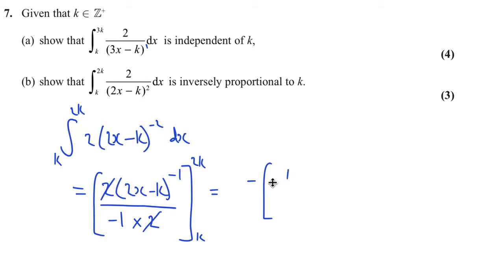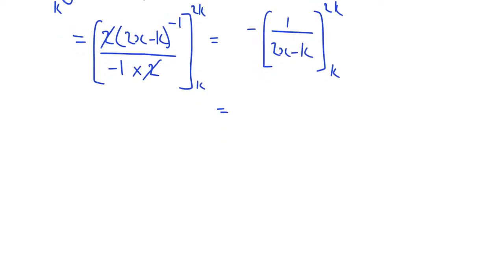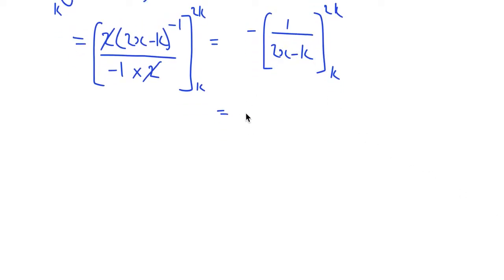So that's 1 over 2x minus k between 2k and k. If we substitute the k's in, what are we going to get? We're going to get negative, this minus outside, 1 over 4k minus k, minus 1 over 2k minus k, so that's just k.